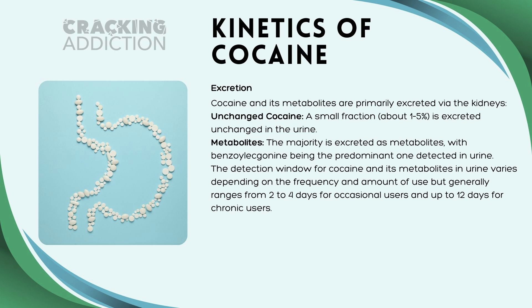Cocaine and its metabolites are primarily excreted via the kidneys — this is why urine drug testing picks up cocaine. Only a small fraction of unchanged cocaine is excreted in urine, about 1% to 5%. The majority of cocaine is excreted as metabolites, with benzoylecgonine being the predominant cocaine metabolite in urine. The detection window for cocaine and its metabolites in urine generally ranges from about two to four days for occasional users, but up to 12 days for chronic users.